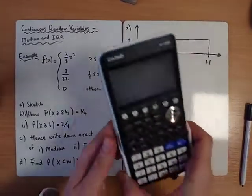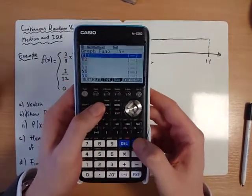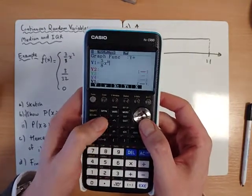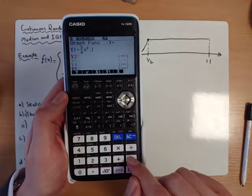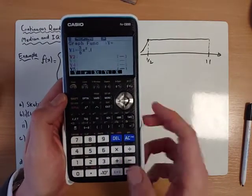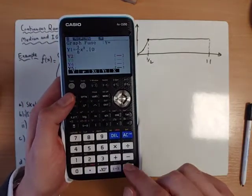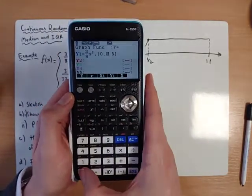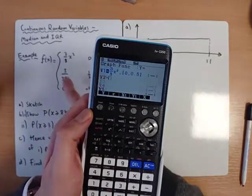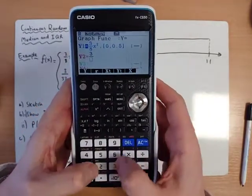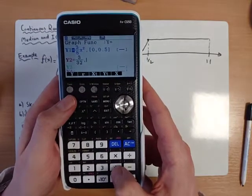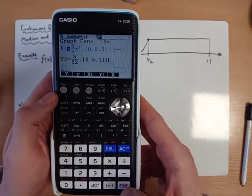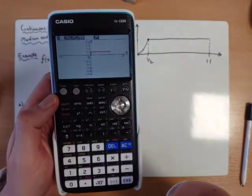A useful trick when you're sketching these in the exam is you can use your graphical calculator. If I enter the first function as 3 over 8 x squared, if I use a comma and a square bracket, which is shift plus shift minus, comma is just here, square brackets are here, I can draw this function between 0 and a half. And I can also draw the other function which is just 3 over 32 between 0.5 and 11.